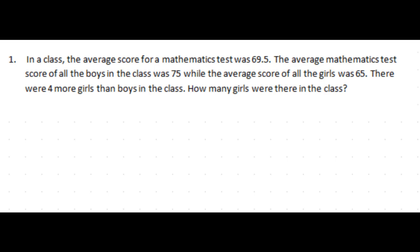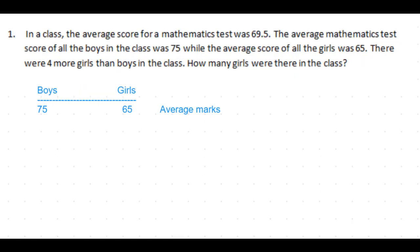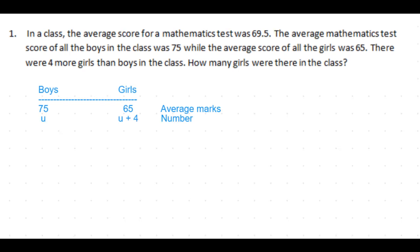Let's now table out boys and girls. The average mark for boys is given as 75 and the average mark for girls is 65. Let's assume the total number of boys in the class as one unit, so I'll mark it as u.